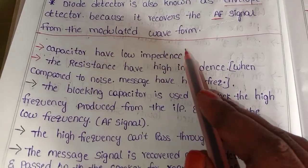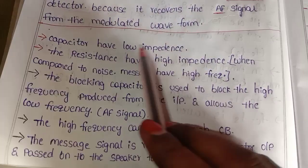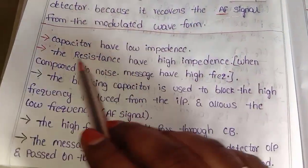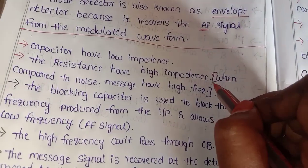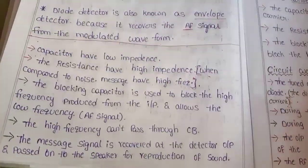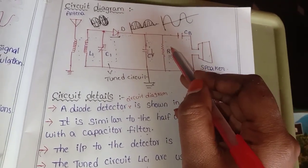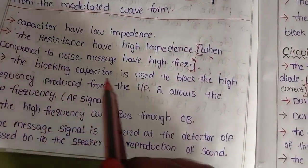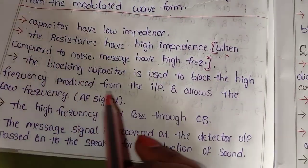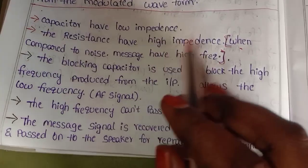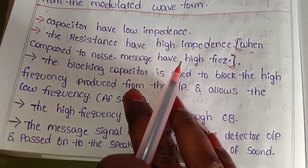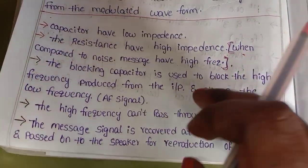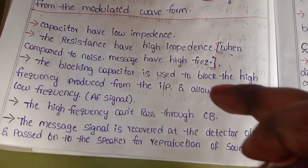The capacitor has low impedance, and the resistance has high impedance. When compared to the noise, the message has higher frequency. The blocking capacitor CB is used to block the high frequency from the input and allow the low frequency to pass. This blocks the high frequency carrier signal and allows the AF signal — audio frequency signal — through. The CB blocks high frequency and the message signal is recovered.